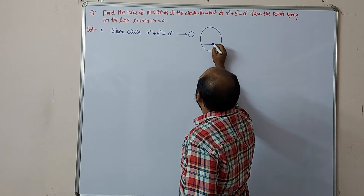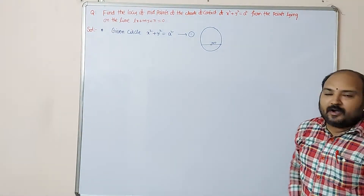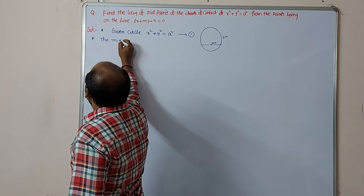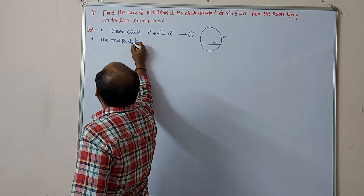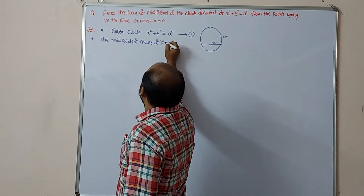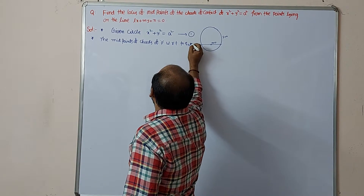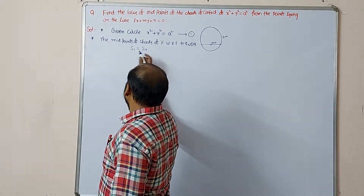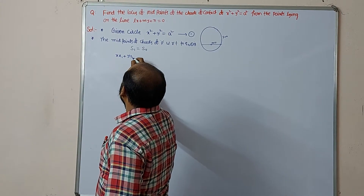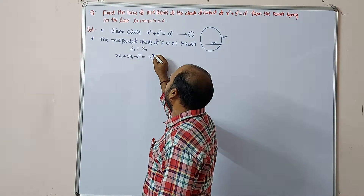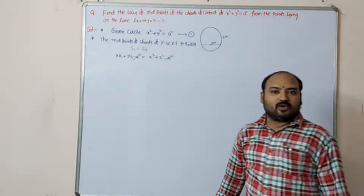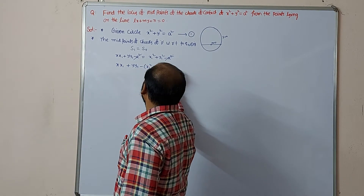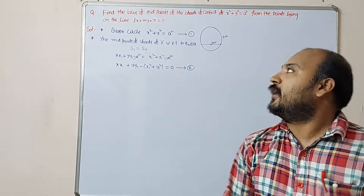The chord's midpoint is (x1, y1). The formula for the midpoint of chords with respect to the circle S = 0 is S1 = S11. So for equation one: xx1 + yy1 − a² = x1² + y1² − a². Both sides the −a² cancels, giving xx1 + yy1 − (x1² + y1²) = 0. Call this equation number two.